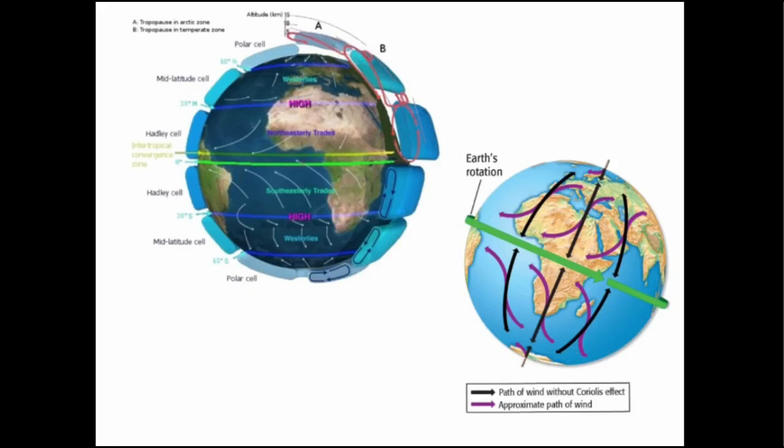This is because of the Earth's rotation, and this is the Coriolis effect. Remember that without the Earth spinning, our winds would travel in straight lines like these black arrows.